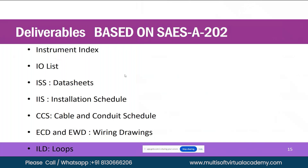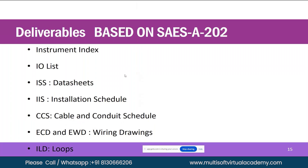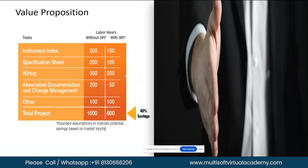For whichever standard your project follows — for example, British Petroleum (BP) — you should review the relevant SPI-related standard. One example is SAES-A-202, which is a Saudi standard. Similarly, BP will have its own standard numbers. This section also covers the value proposition: the difference between conventional design tools and SPI.